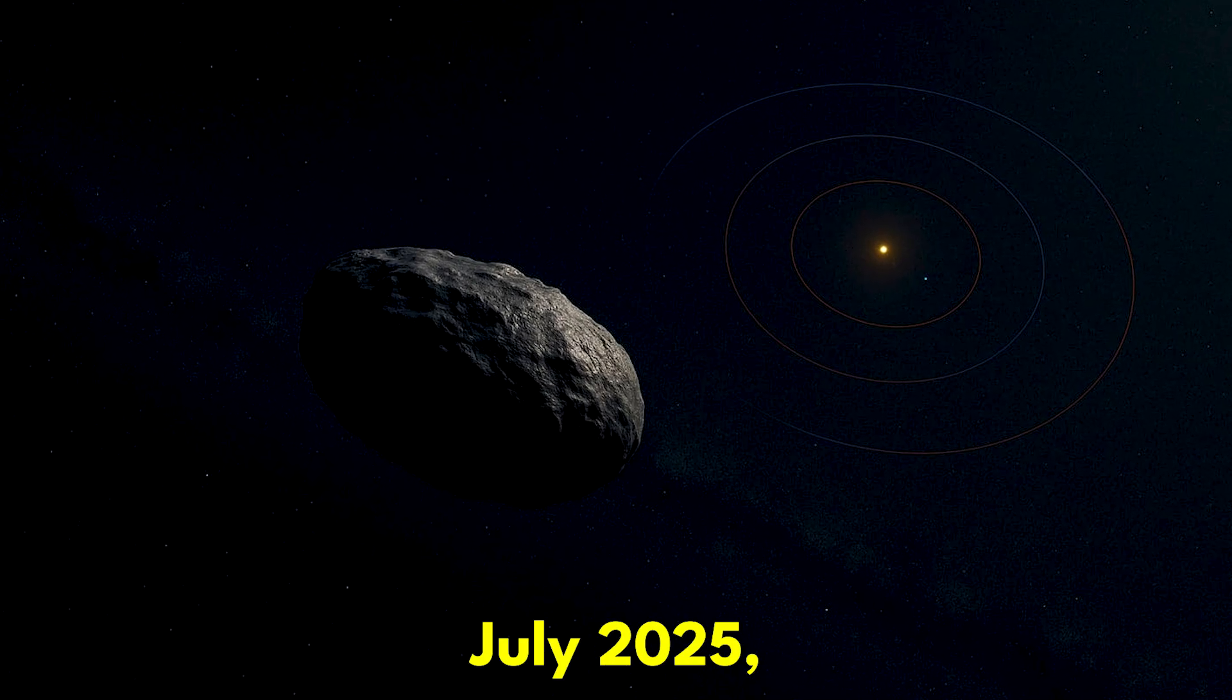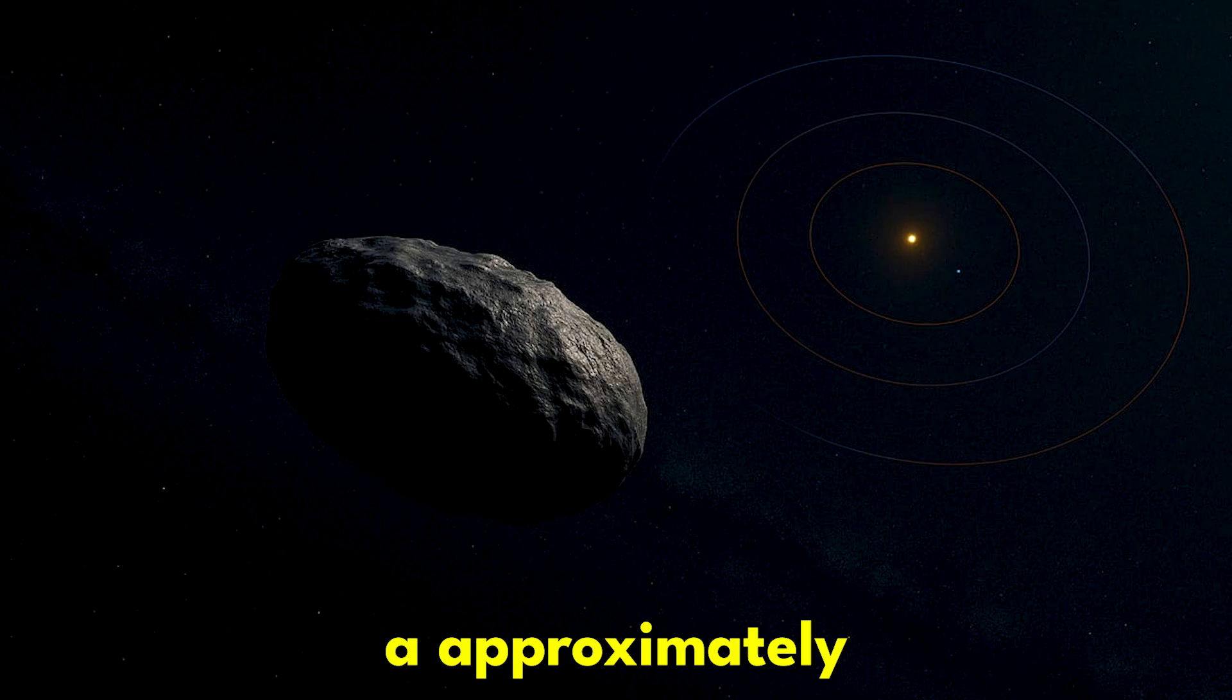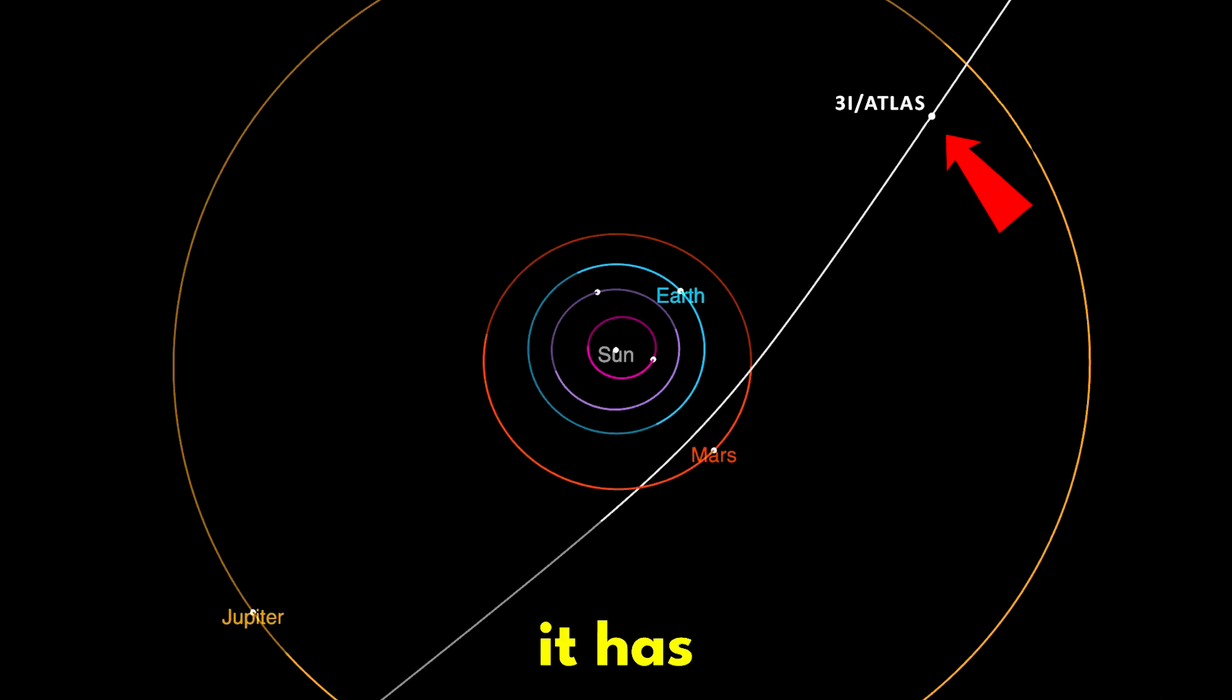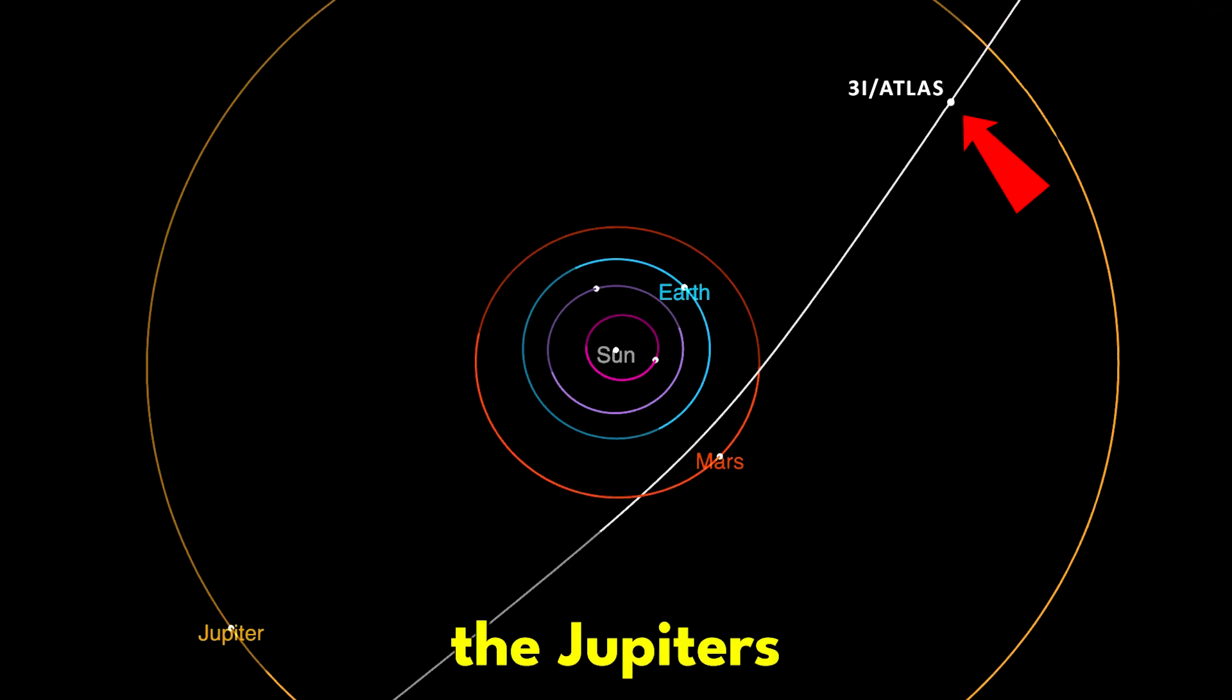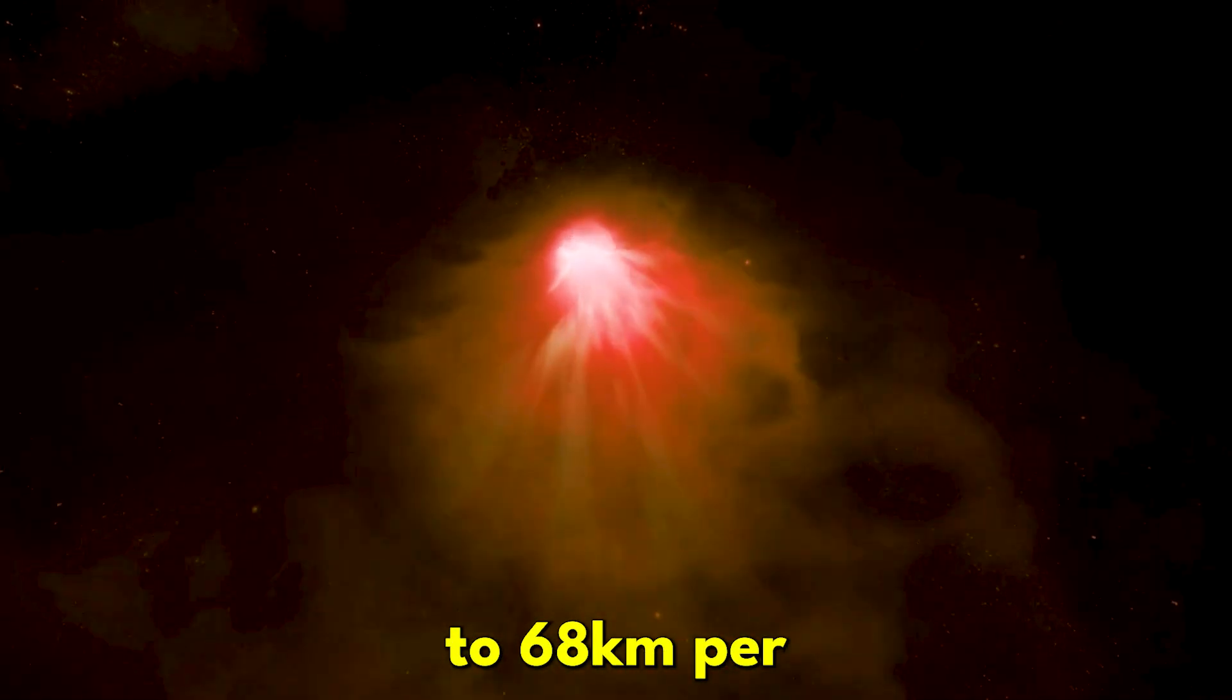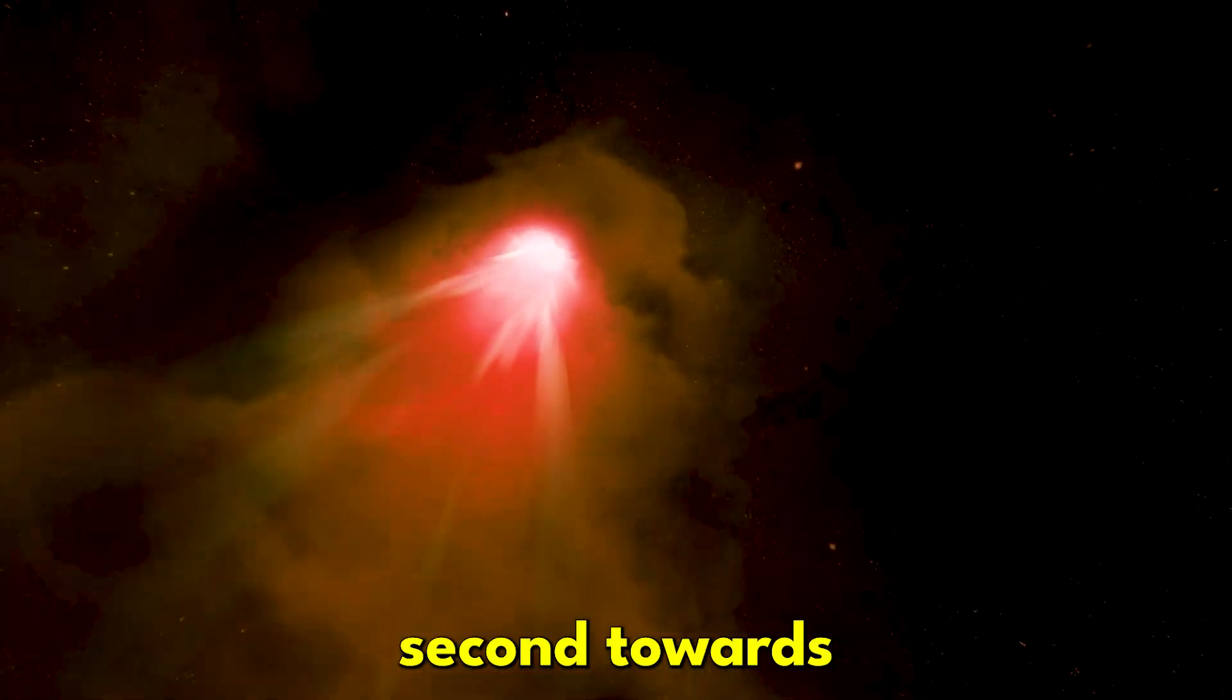By early July 2025, the object was approximately 670 million kilometers from the Sun, meaning it has officially crossed Jupiter's orbit and moving at a speed of 60 to 68 kilometers per second towards the Sun.